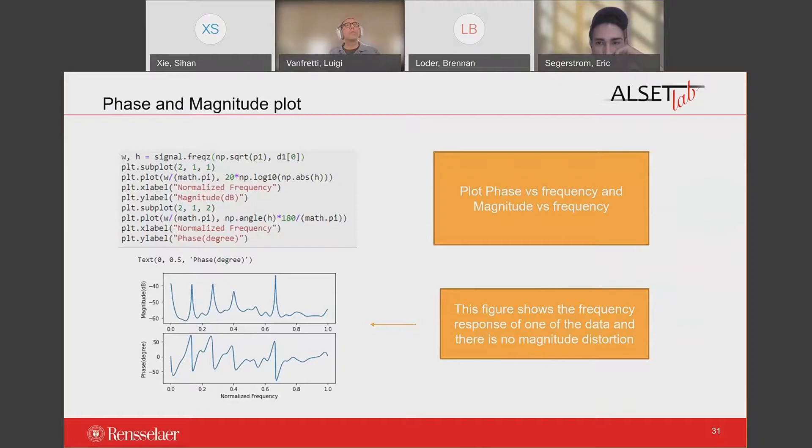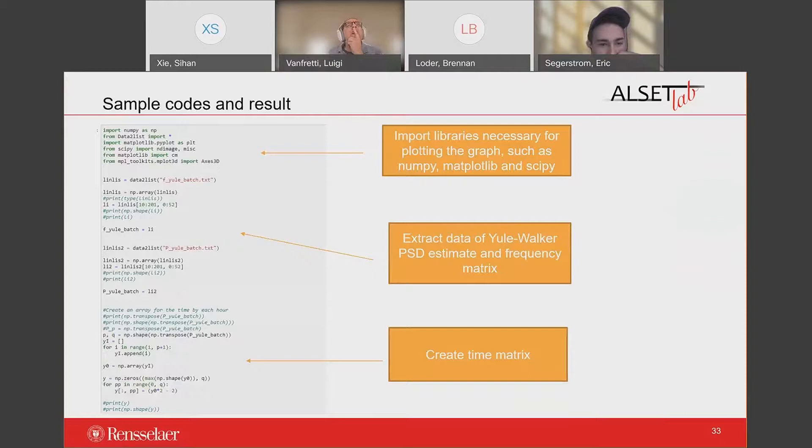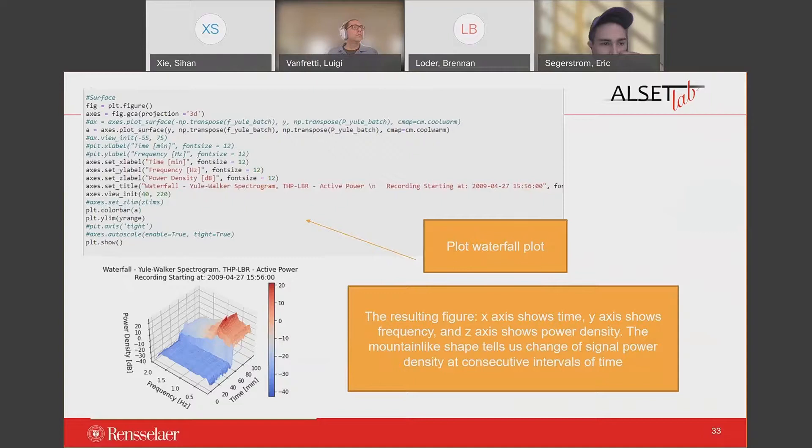The fourth function we need to plot is the waterfall plot and the spectrograph. The waterfall plot is a three-dimensional plot in which multiple data curves are manifested simultaneously. It is often used to capture the time-frequency relationship of a signal. The function used to draw the graph is the plot surface in matplotlib, where X, Y, Z represents the vectors on each axis. Here is the sample code that generates the waterfall plot. First is to extract data of Yule-Walker PSD estimate and the frequency matrix. The second step is to create time matrix of equal shape as Yule-Walker PSD matrix. Then we are able to generate the waterfall plot by using the plot surface function.